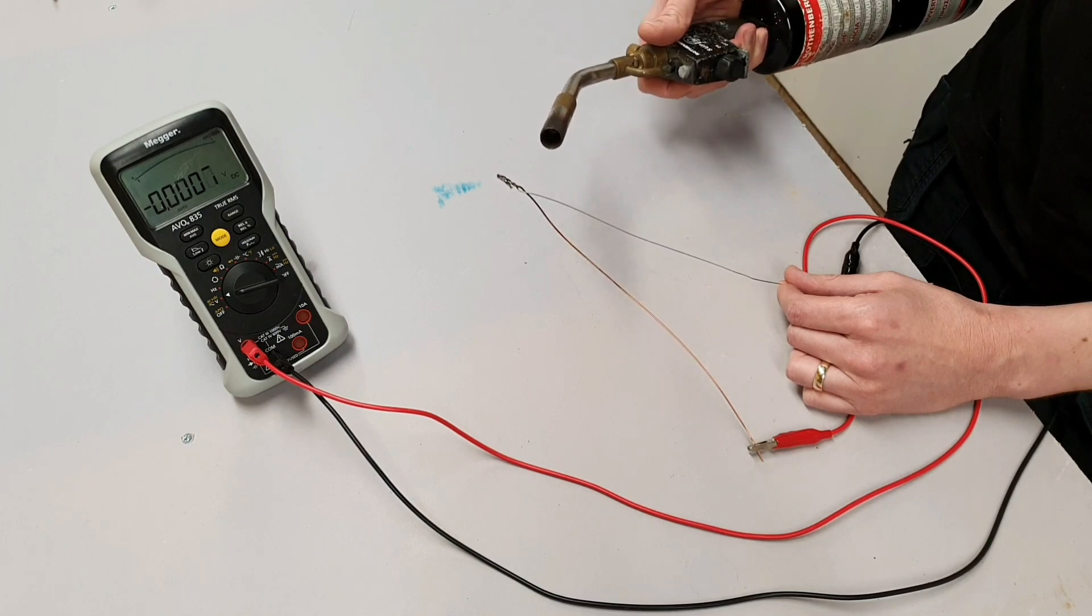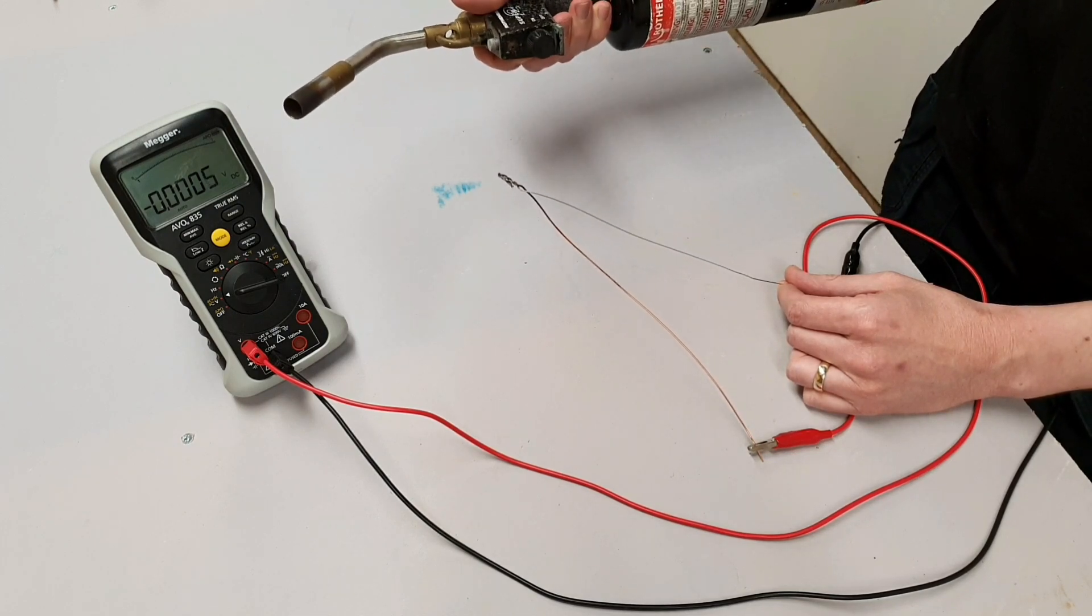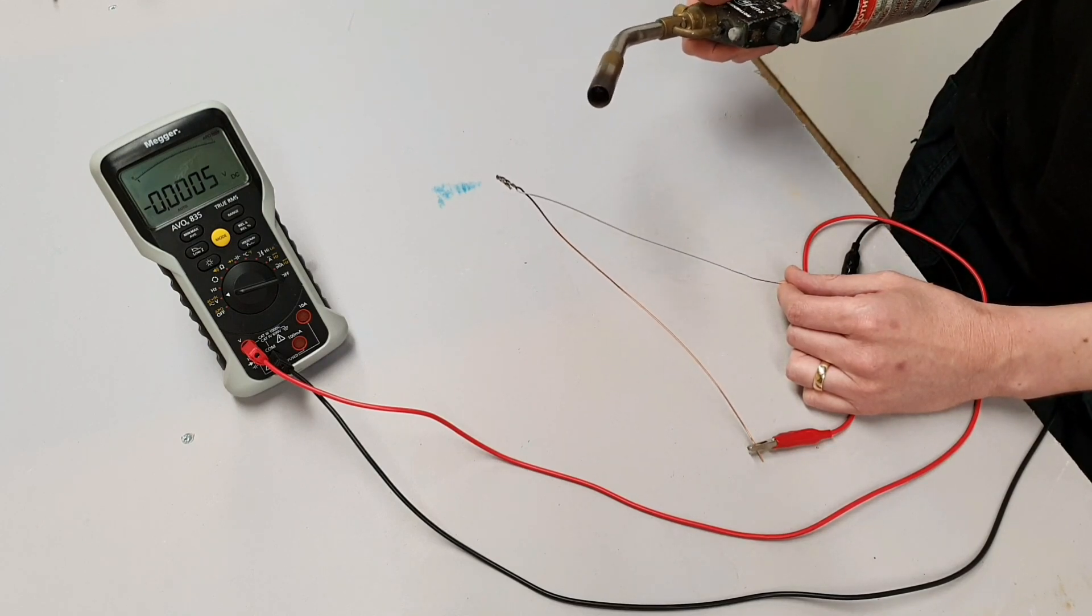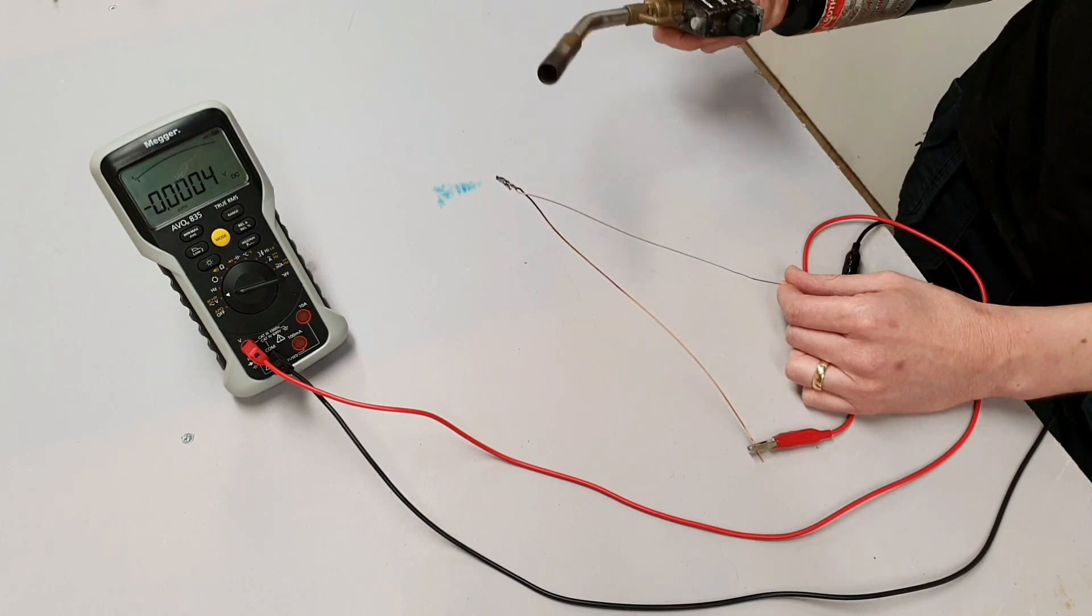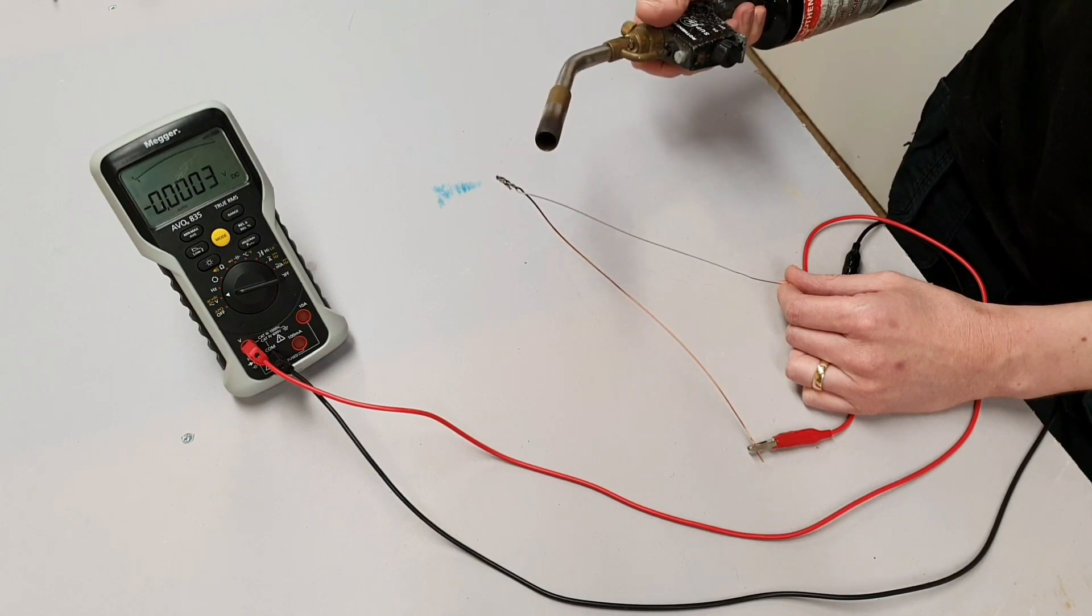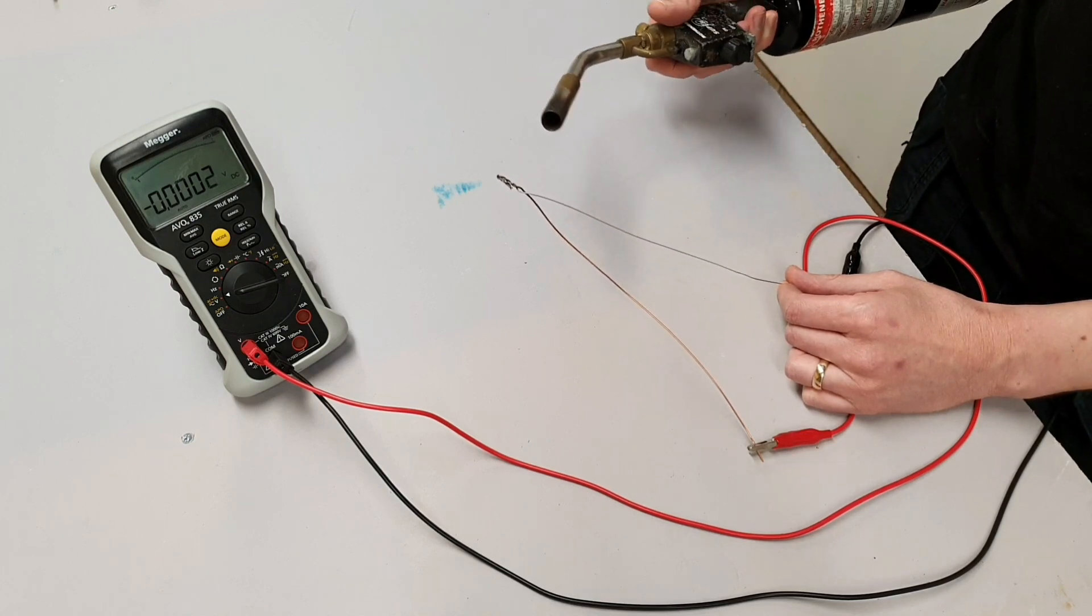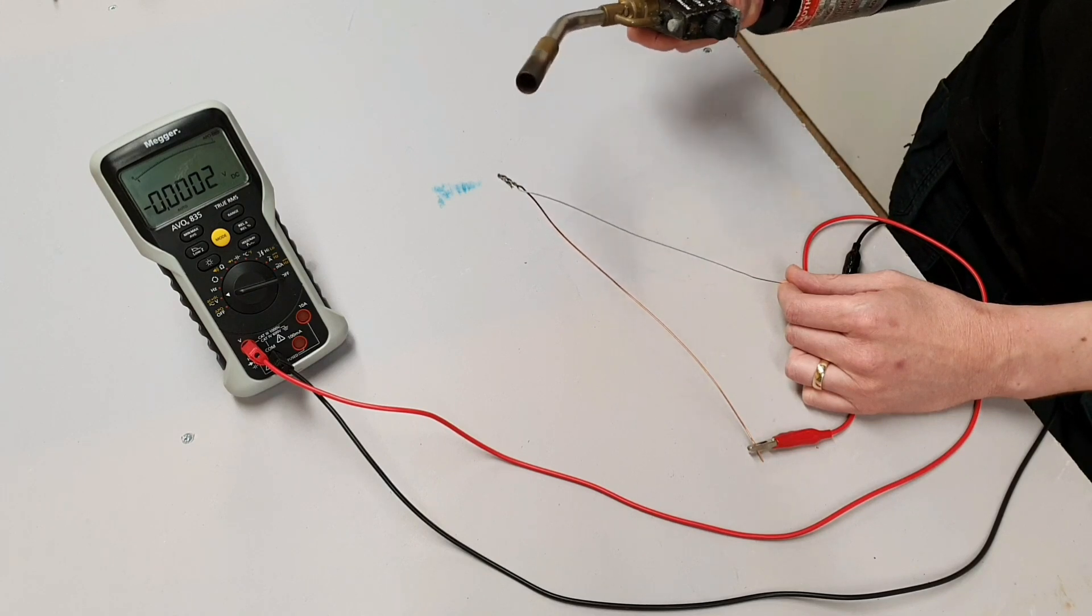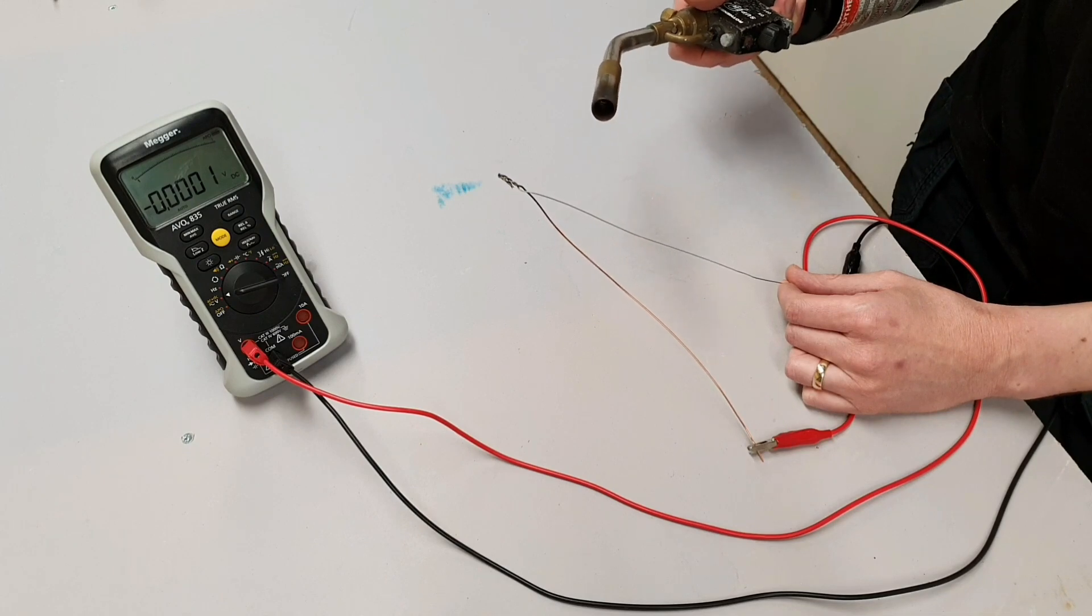What we can use it for is we can use it to actually monitor the temperature of things. By taking that voltage reading that we just had and turning that into a temperature reading using a special device that changes the voltage reading into a temperature reading, we can actually use this principle to monitor the temperature of things like boilers or ovens.